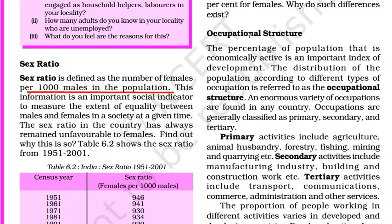Now we need to know about occupational structure. A country's literacy rate will define what kind of occupational structure it has. Occupational structure is the distribution of population according to different types of occupation. The first is primary activities, which include agriculture, animal husbandry, forestry, fishing, and mining. Secondary activities include manufacturing industry, building and construction works. The tertiary sector includes transport, communication, commerce, administration, and other services. The secondary activities are also known as the industrial sector, and the tertiary activities are also known as the service sector.